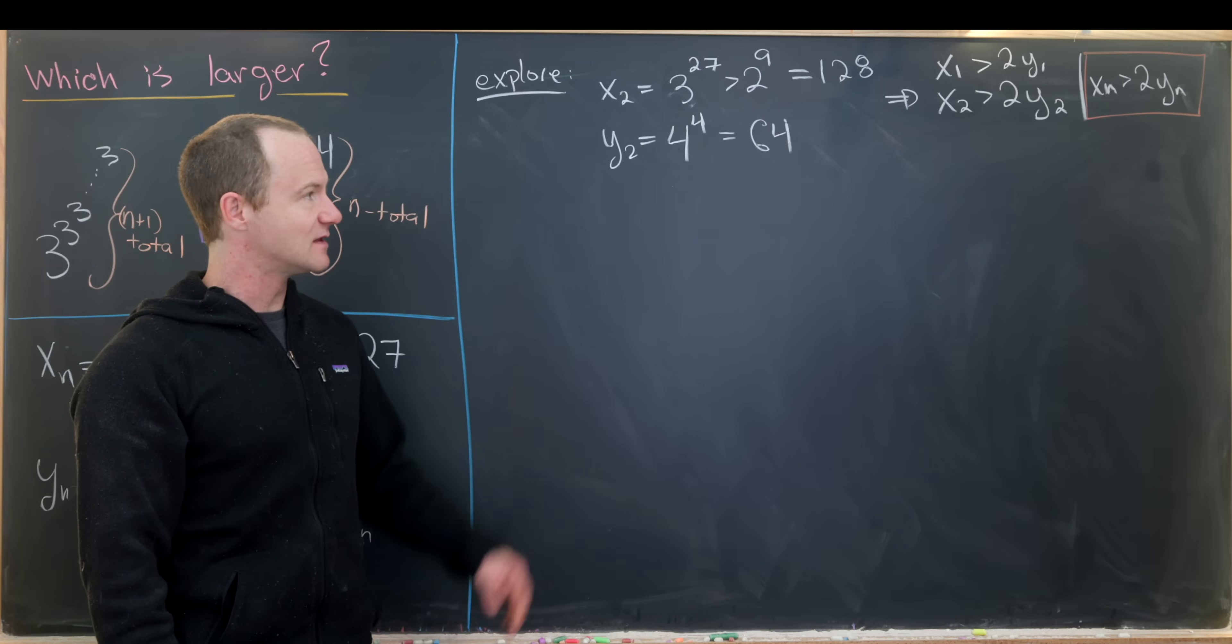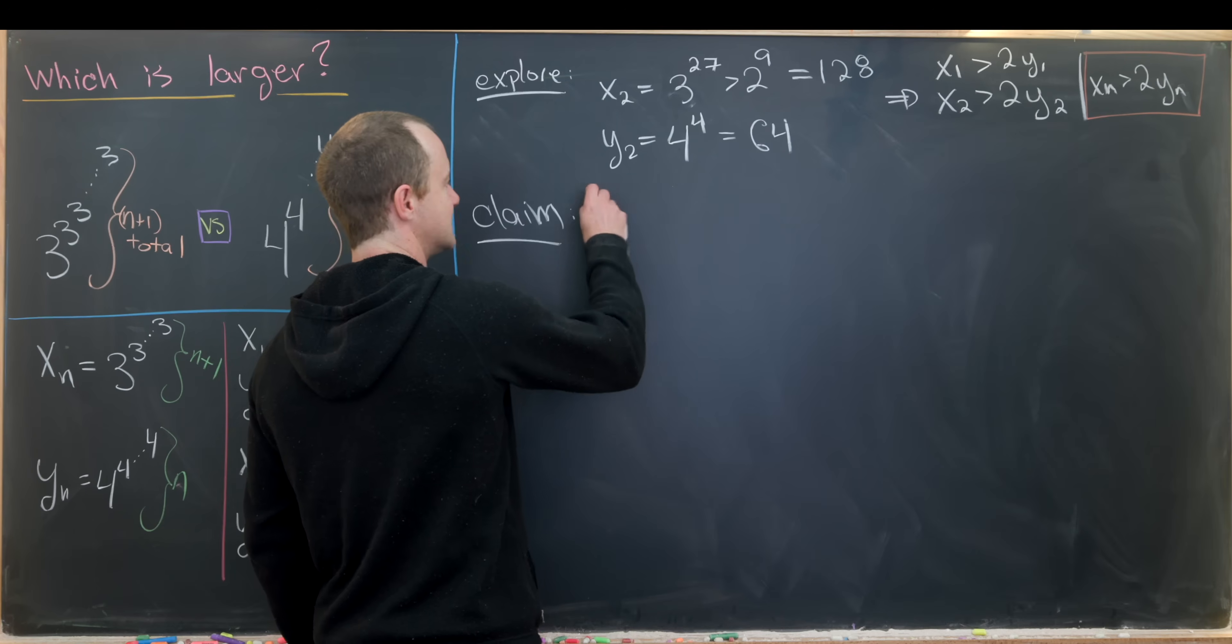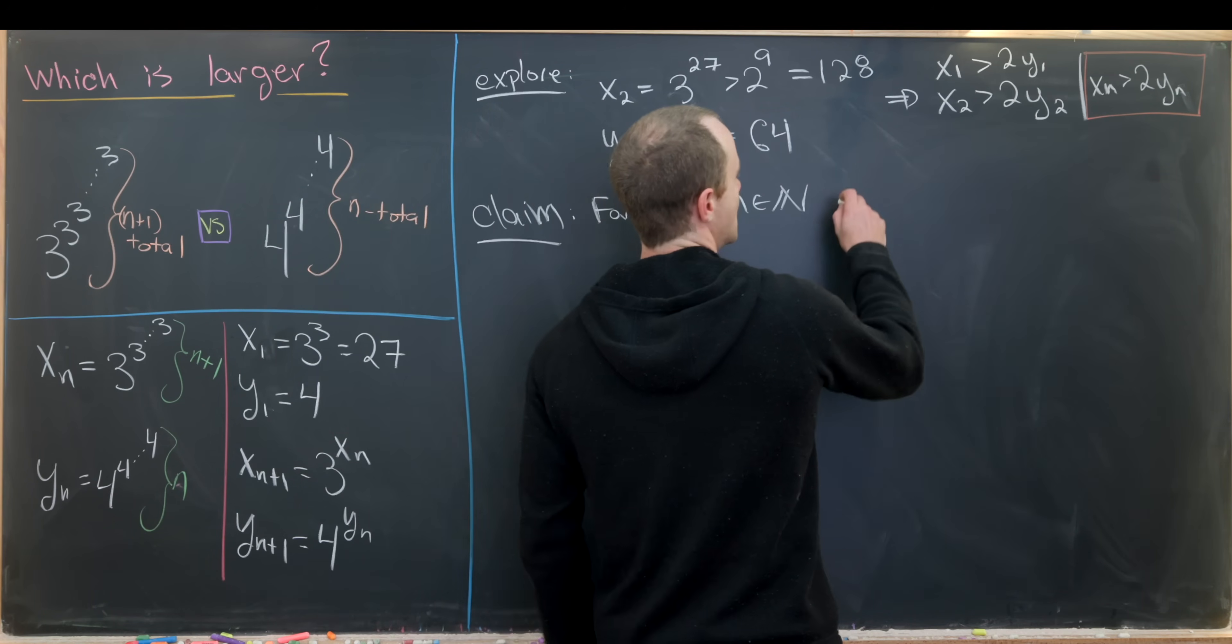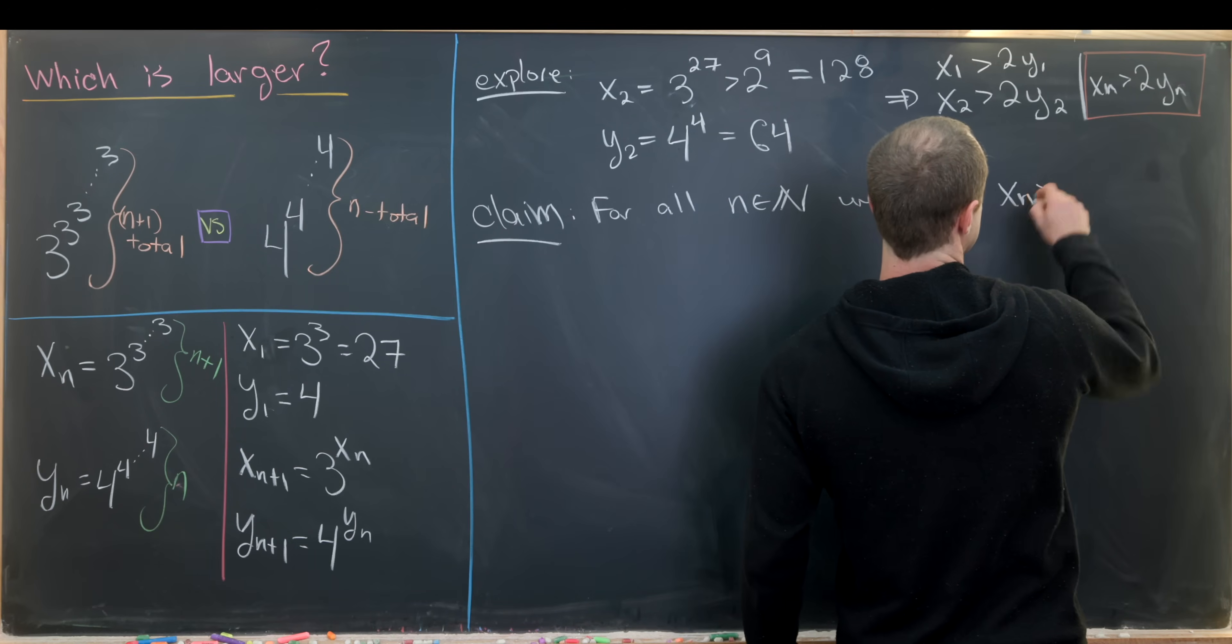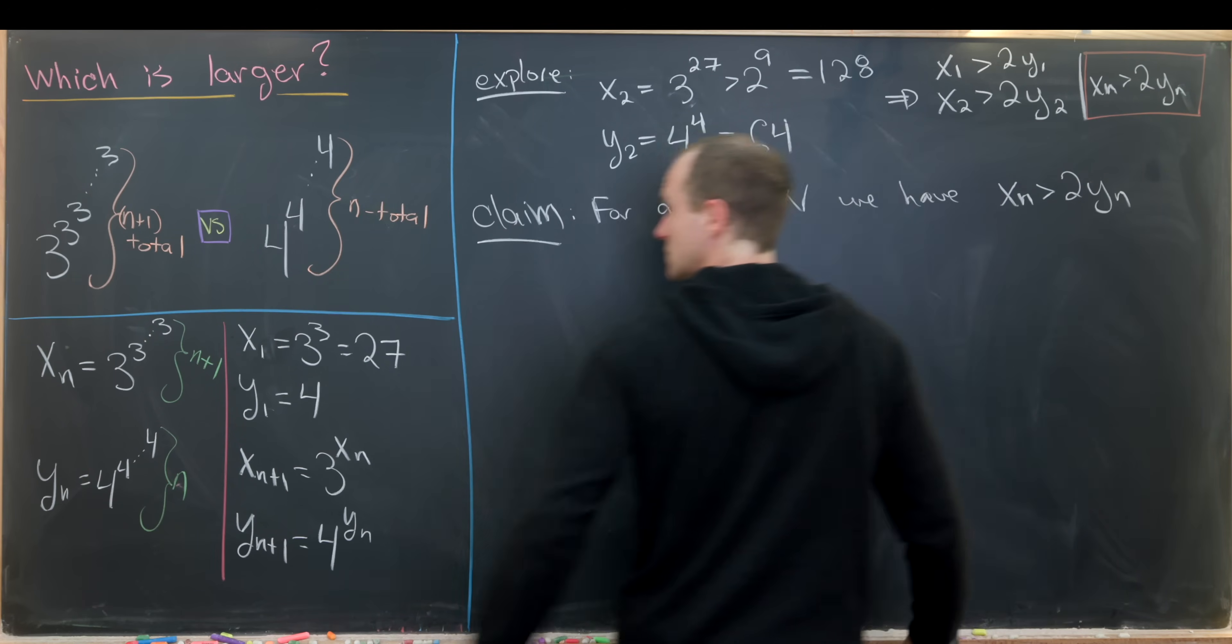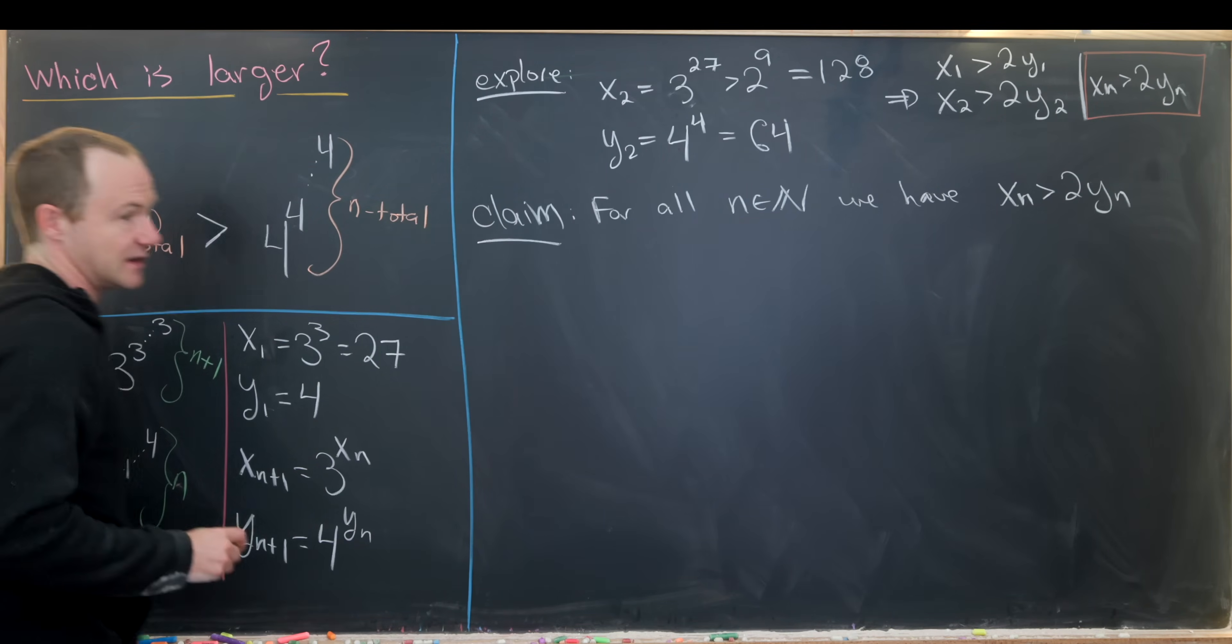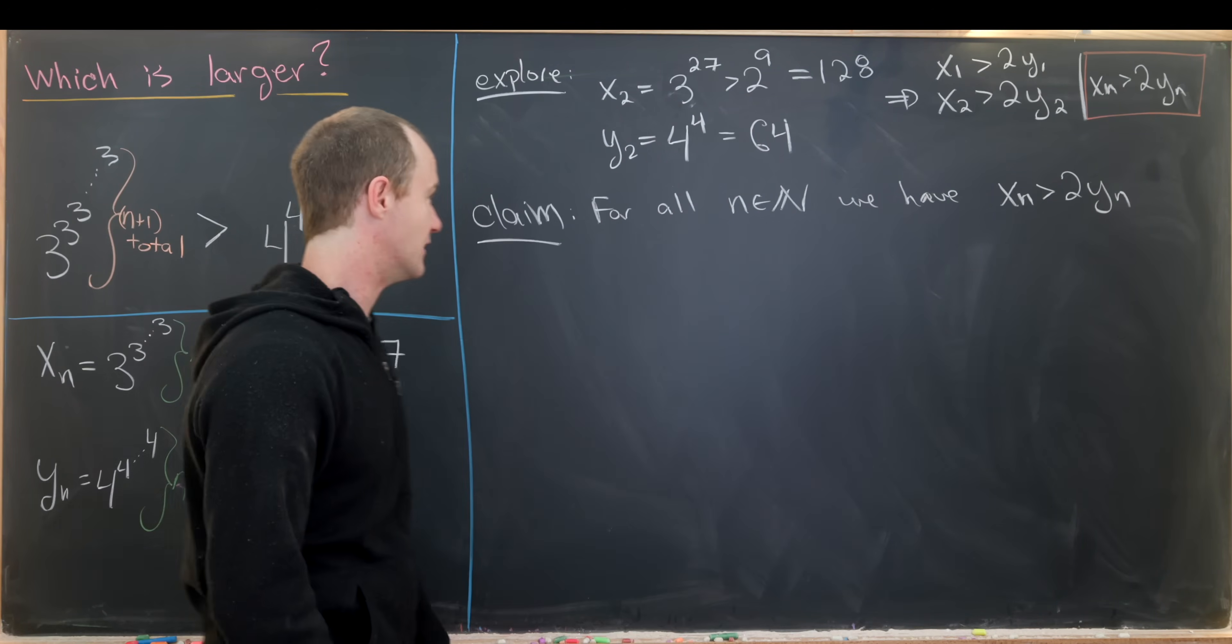Okay, so now let's get into our claim which will solve this problem. And that is: for all natural numbers n, we have xn is bigger than 2 times yn. So notice if we can prove this, then we have the inequality that this power tower of 3s is bigger than this power tower of 4s.